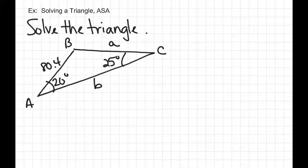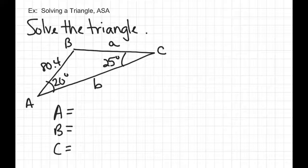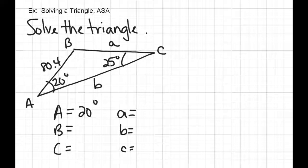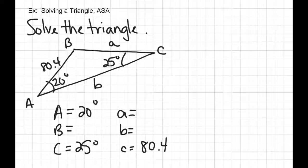Solve the triangle. Whenever we ask you to solve a triangle, make yourself a little chart. The three angles — always capital letters for the vertices — go in one column, and the sides go in the next column using lowercase letters. Start by filling out the givens: angle A is 20 degrees, angle C is 25 degrees, and the only side given is side c, which is 80.4.